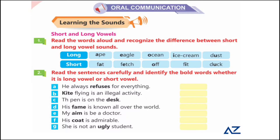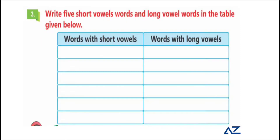For example: ape, eagle, ocean, ice cream — and dust, duck. You can see that 'u' is long in the first word 'dust' and short in 'duck.' Similarly: ice cream, fit, ocean, eagle, fetch, ape, fat. You have to read the sentences carefully and identify the bold words — whether it's a long vowel or short vowel. Write LV for long vowel and SV for short vowel on the spaces given.